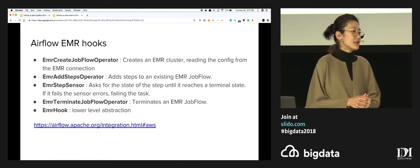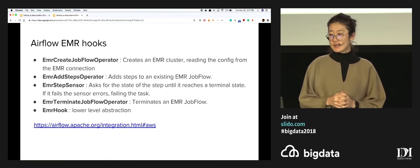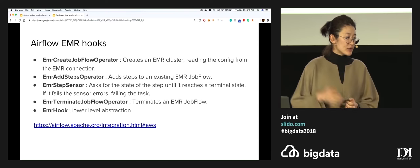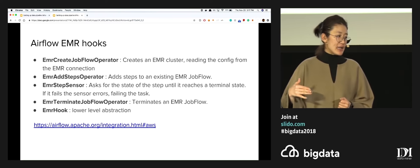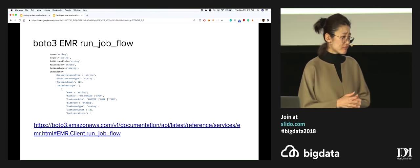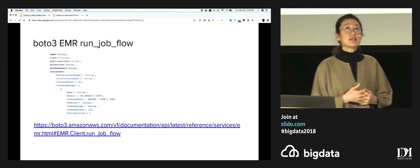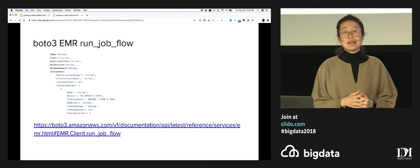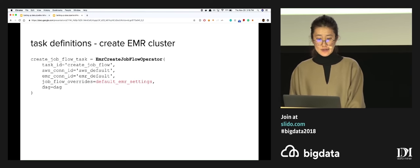The specific operators we're using today to achieve this are the EMR hooks provided in the Airflow contrib package. The top four are basically the high-level abstractions which use the EMR hook, and underneath all of this is Boto3. We mention Boto3 specifically because Airflow documentation on this is actually pretty sparse, so if you want to configure your cluster to do anything customizable, you have to look at the Boto3 documentation.